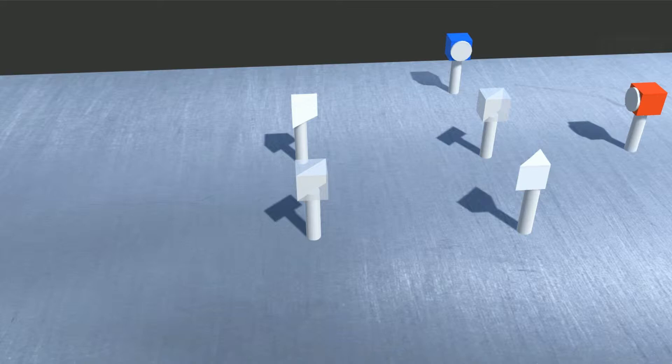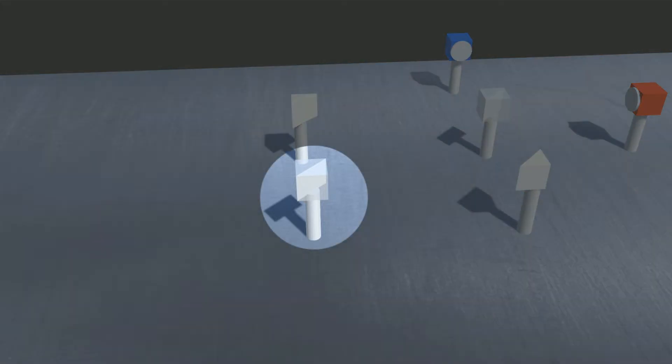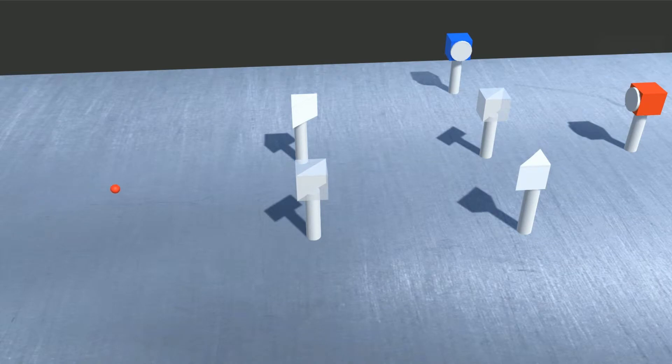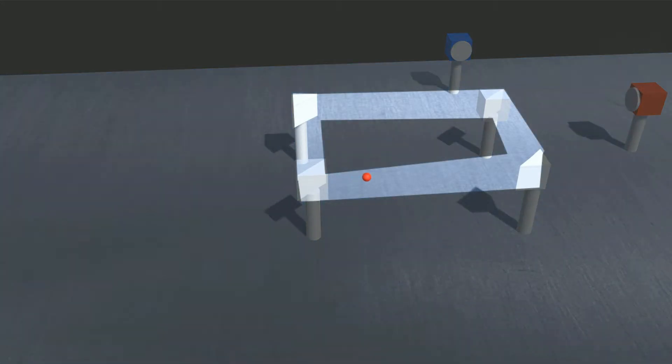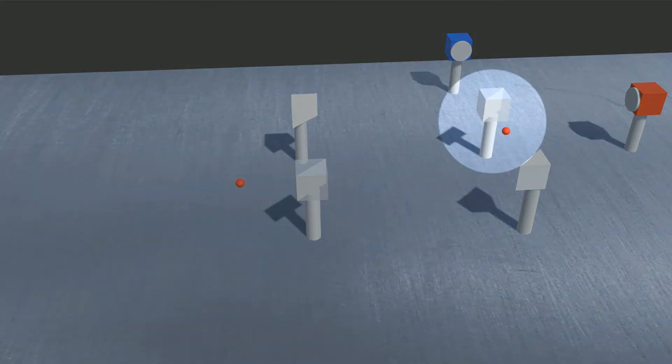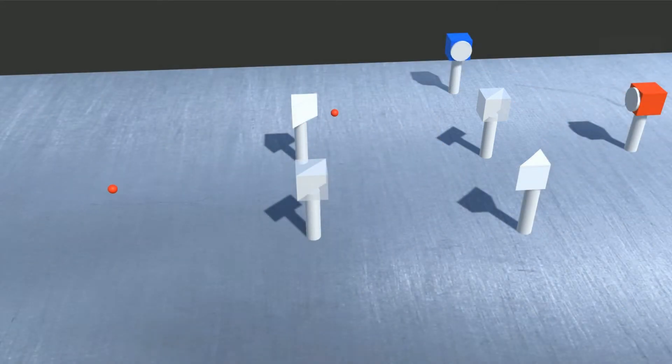This is a Mach-Zehnder interferometer. It consists of a half-silvered beam splitter where incoming light is split between two paths. These two paths then lead to another half-silvered beam splitter where the light is recombined.